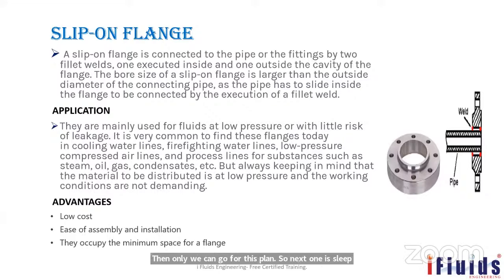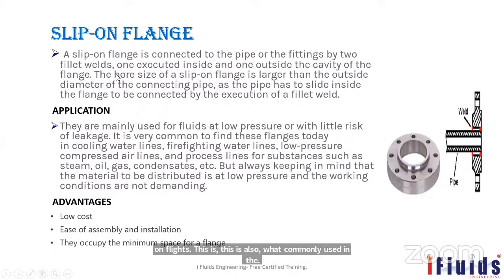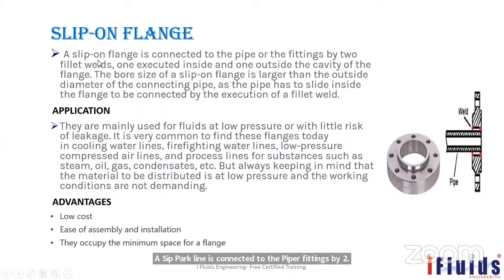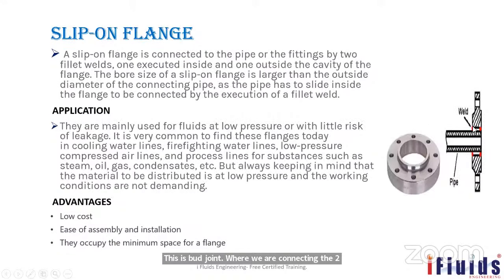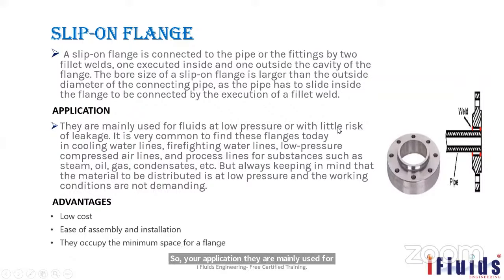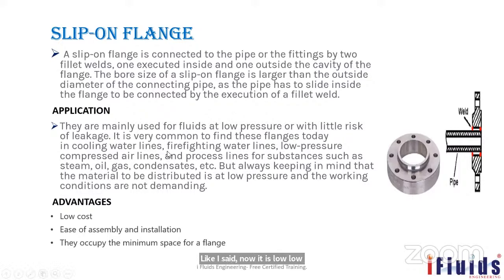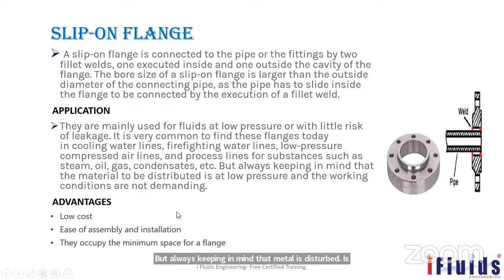Slip-on flange is also commonly used in industries. It is connected to the pipe by two fillet welds. It is mainly used for fluids at low pressure, such as cooling water lines, fire water lines, and low-pressure steam. It is less costly than weld neck flange because the flange weight is less.